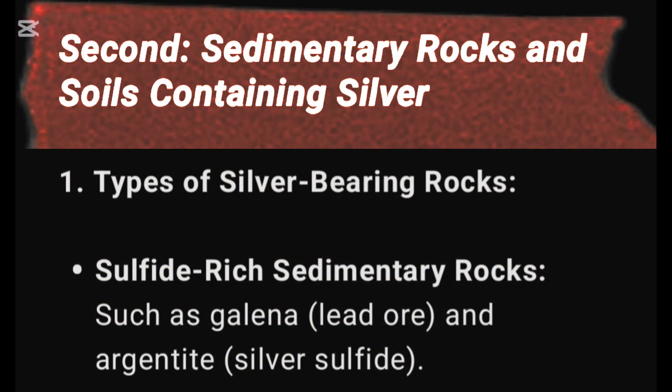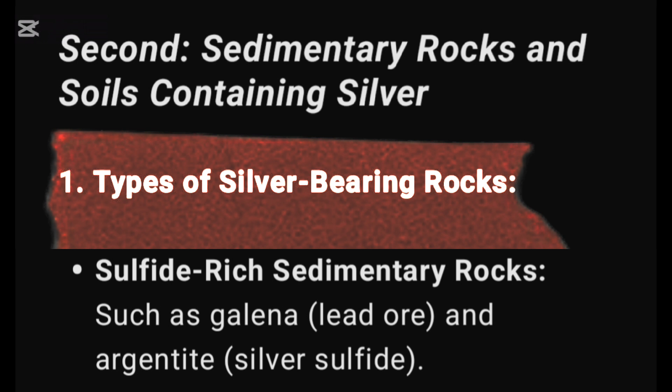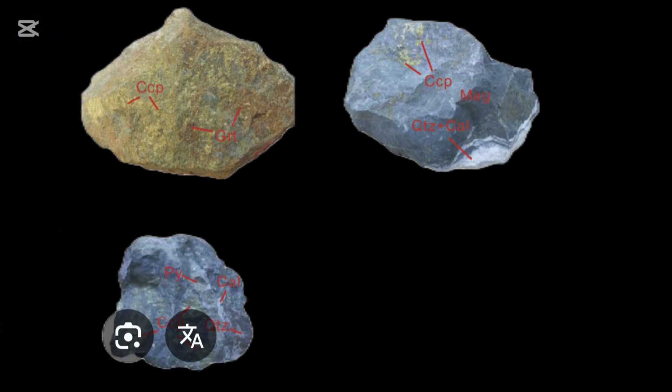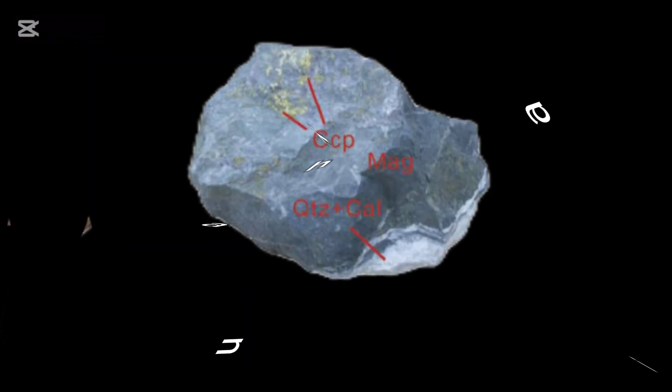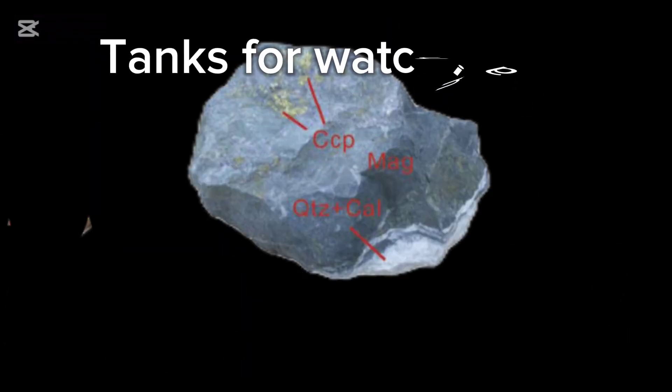Sedimentary rocks and soils containing silver. Types of silver-bearing rocks: sulfide-rich sedimentary rocks, such as galena (lead ore) and argentite (silver sulfide).